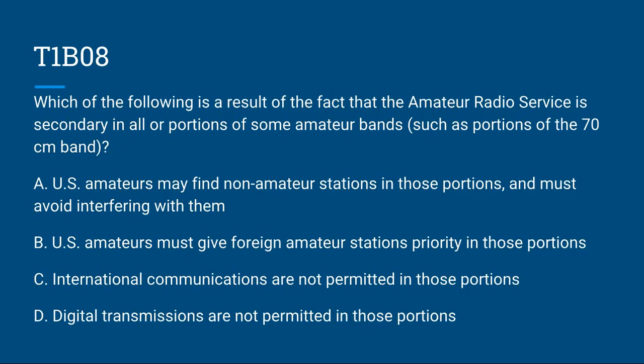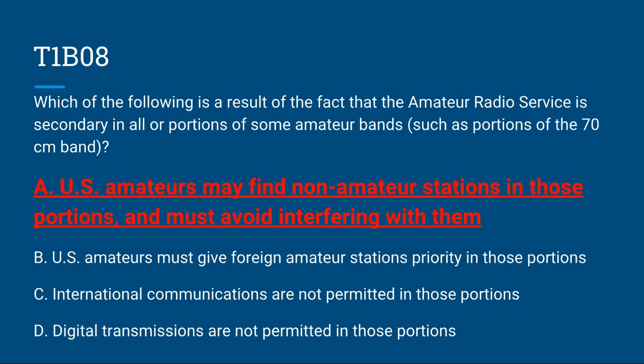T1B08: Which of the following is a result of the fact that the amateur radio service is secondary in all or portions of some amateur bands, such as portions of the 70 cm band? A, U.S. amateurs may find non-amateur stations in those portions and must avoid interfering with them; B, U.S. amateurs must give foreign amateur stations priority; C, international communications are not permitted; or D, digital transmissions are not permitted. The correct answer is A, U.S. amateurs may find non-amateur stations in those portions and must avoid interfering with them.